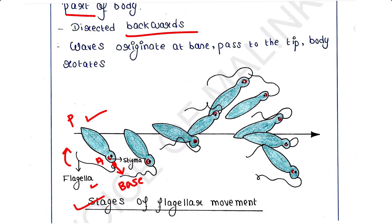The wave arises at the base of the flagellum and it passes to the tip of the flagellum, which is backwardly directed. The wave is transmitted from the base toward the tip, and it causes the body to rotate.